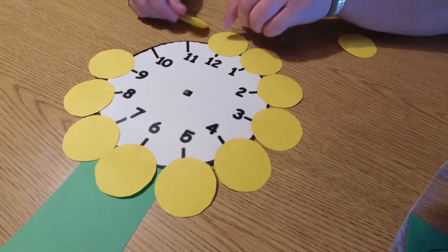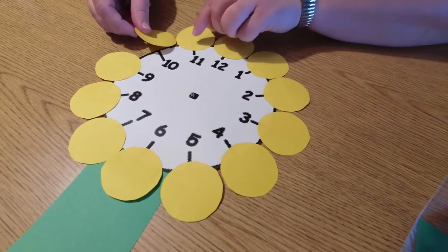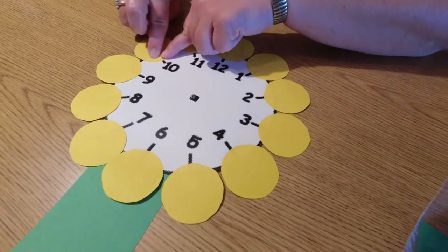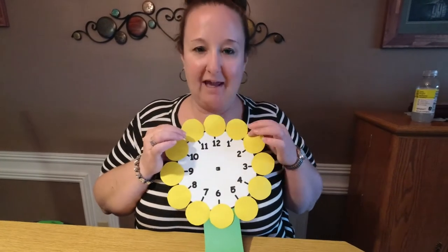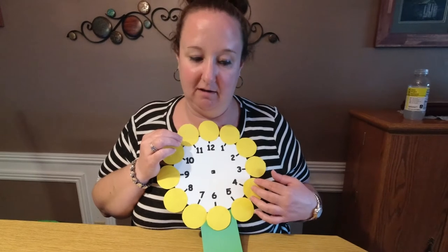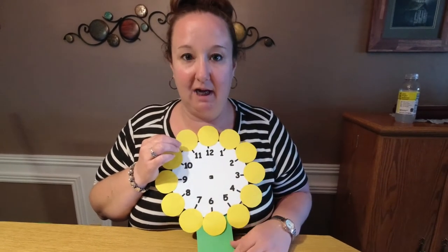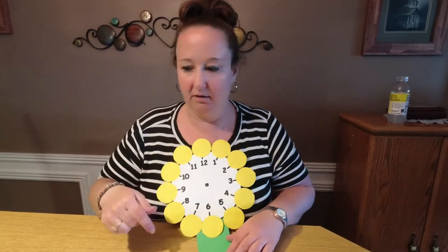Feel free to pause and rewind if you need to go and hear the directions again if you didn't understand something. All right there's my petals all glued on around my clock. Each of these petals is going to be a helper for us now to tell us the minutes in the clock. So the next step that I need to do is I need to use my pencil and I need to write the minutes on the clock.